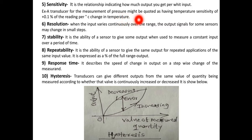Of plus 0.1 percentage of the reading per degree Celsius change in the temperature. Resolution: when the input varies continuously over the range, the output signals for some sensors may change in small steps.